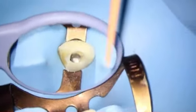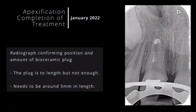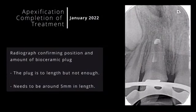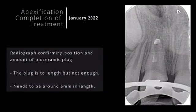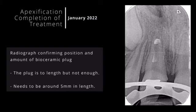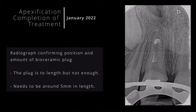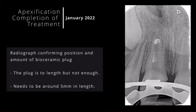Once the initial pellet is placed, a radiograph is taken to confirm if it is at the correct working length and if the volume is correct, ideally five millimeters. In this case, it was at a good length but not enough bioceramic to fill approximately five millimeters from the apex.